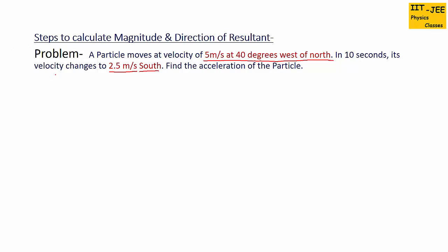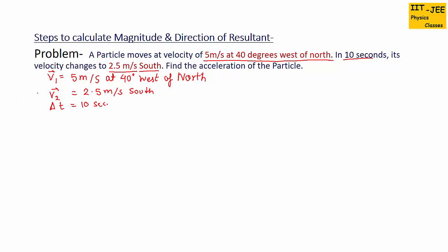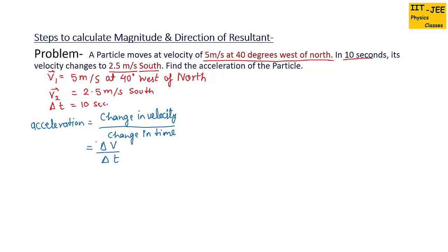We are given two velocity vectors. The first vector v1 is 5 meters per second at 40 degrees west of north, and the second velocity vector v2 is 2.5 meters per second south. Time is also given: delta t equals 10 seconds. The formula for acceleration is change in velocity over change in time, that is delta v over delta t. So the change in velocity is v2 minus v1, meaning we need to subtract vectors v1 and v2.